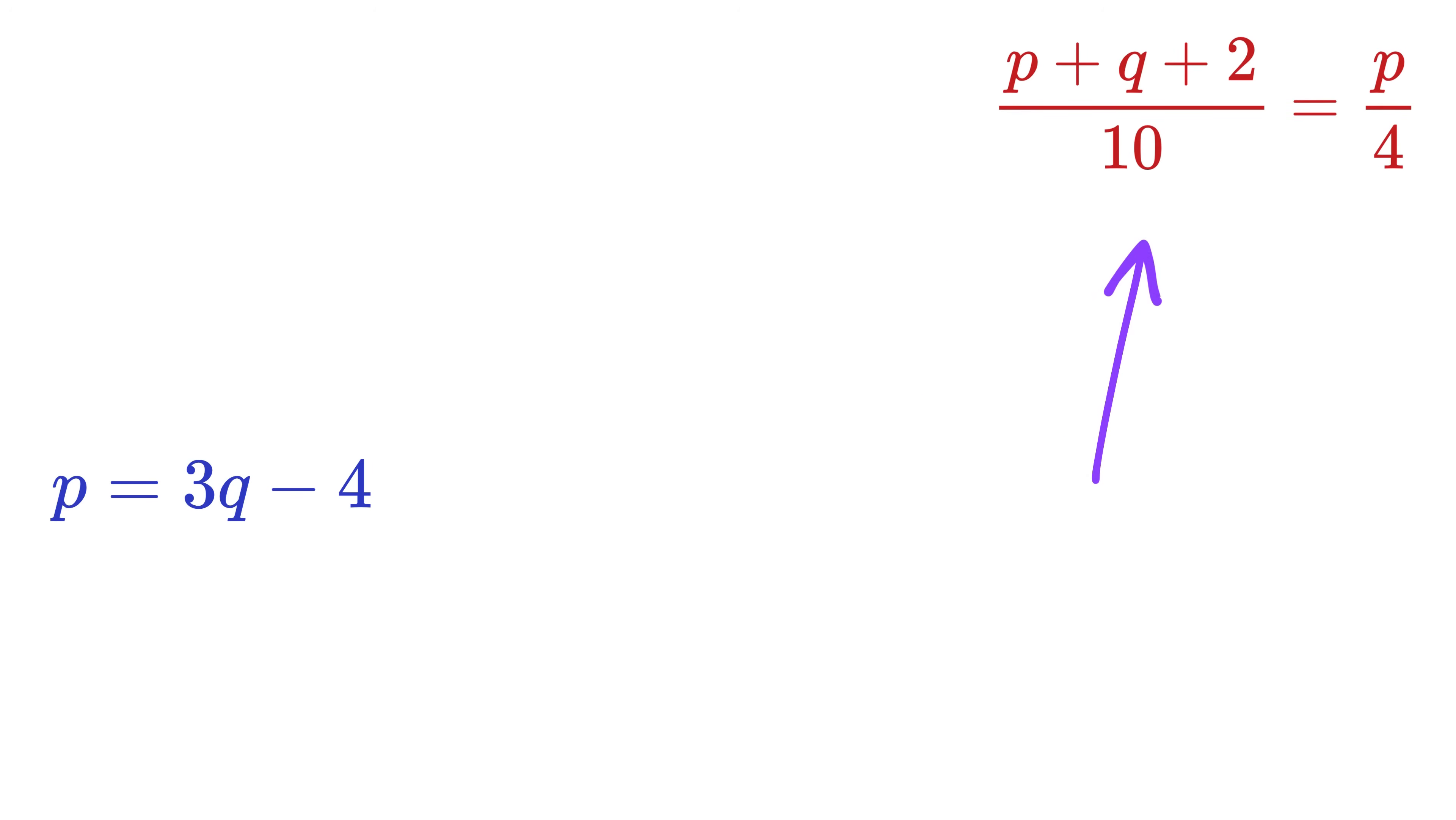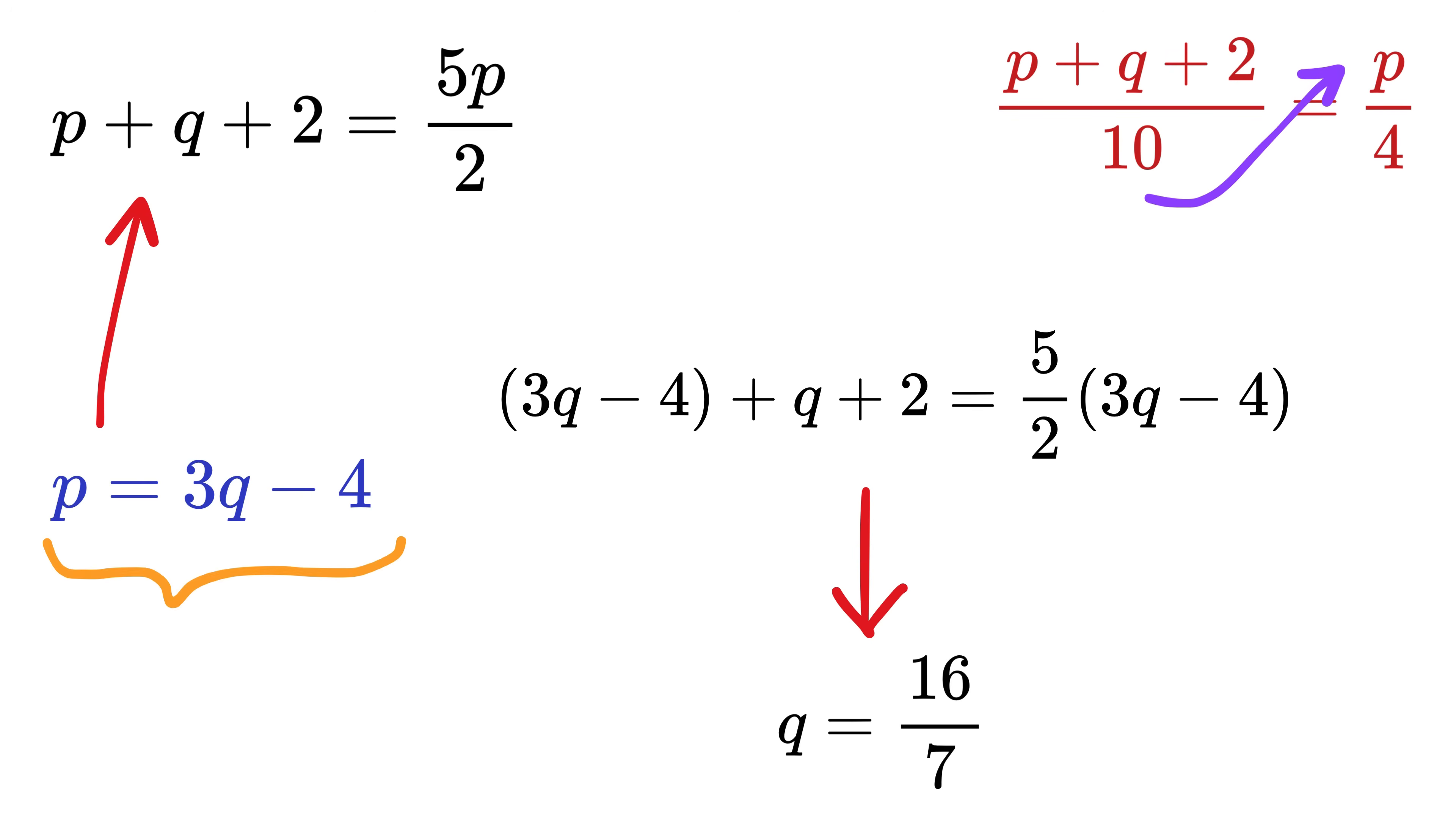Now, in this equation, take 10 here to get P plus Q plus 2 equals 10 over 4P or 5 over 2P. Substitute P in terms of Q from here to get this, and now this is simple algebra. We get the value of Q as 16 over 7, and using this we get P as 20 over 7.